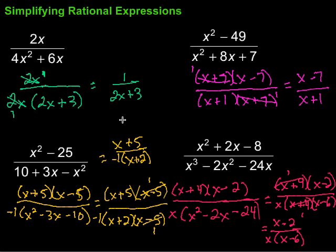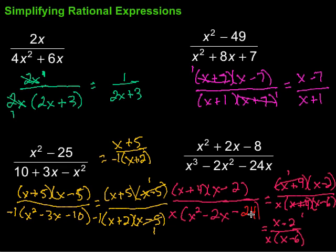So, simplifying rational expressions — what we want to do is find something that we can divide both the numerator and denominator by. To do that, we're going to want to factor if possible. We did a lot of factoring here. If you need to brush up on your factoring skills, don't be afraid to do that, because that's going to be really important as we approach these problems. Then we find something in common in both the numerator and denominator, divide it out, simplify, and off we go. Hope this video is helpful — keep working hard on your math. You can do it!